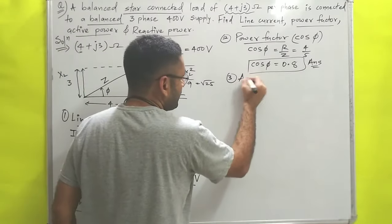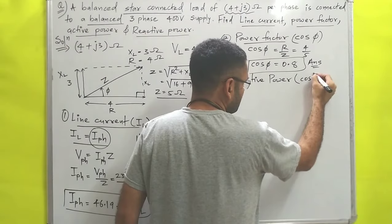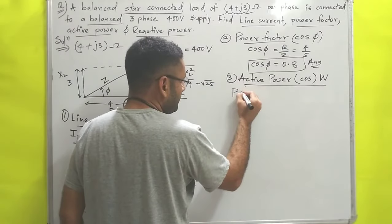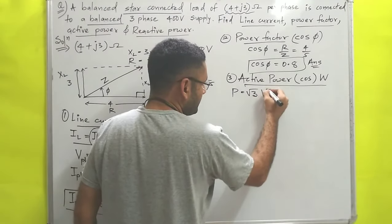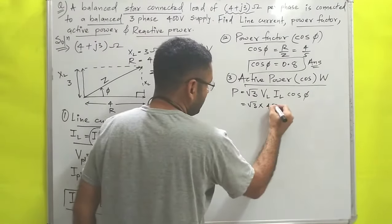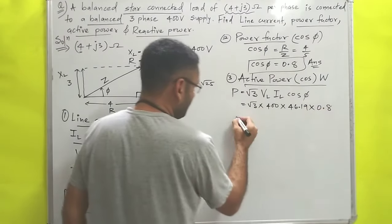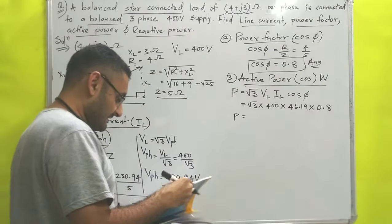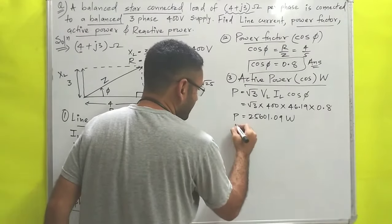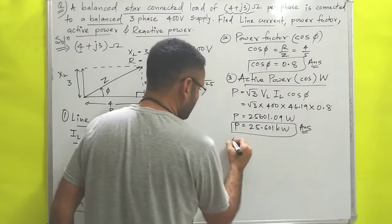The third question is active power, which is the real component measured in watts or kilowatts. Using the formula P = √3 · VL · IL · cos φ = √3 × 400 × 46.19 × 0.8 = 25601.09 watts, or 25.601 kilowatts. This is answer number three.